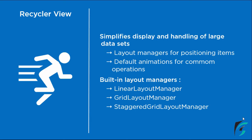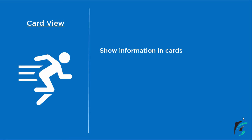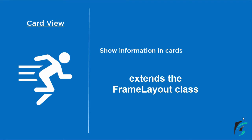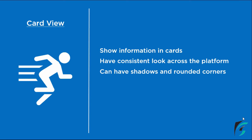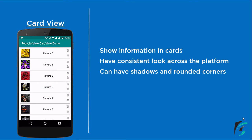Now let us proceed towards the CardView — what it is and how we can use the CardView widget with the RecyclerView. CardView shows information in the form of cards. It extends the FrameLayout class and helps us show information inside a card, giving a consistent look across the platform. Our list items will be inside the card, providing a consistent and uniform look. CardView can have shadows and rounded corners — we can provide our card with shadows, elevations, and rounded corners. On the left side of the screen, you can see what CardView looks like, with each item's detail in the form of a card with rounded corners and certain elevations. This CardView can be used with the RecyclerView to provide a list of items in the form of cards.